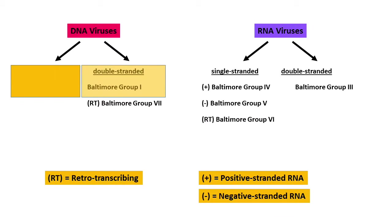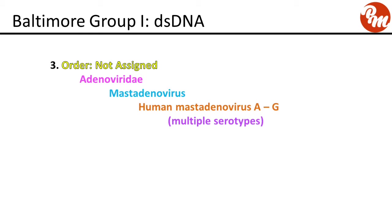Now the double-stranded DNA viruses, Baltimore Group 1. Order not assigned, family Adenoviridae, genus mast adenovirus, with species human mast adenovirus A through G, and there are multiple serotypes within this group.